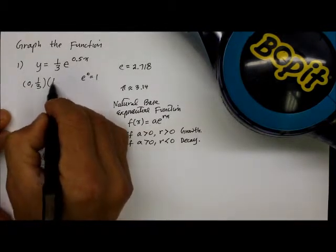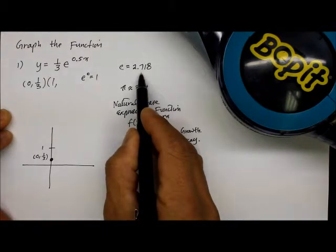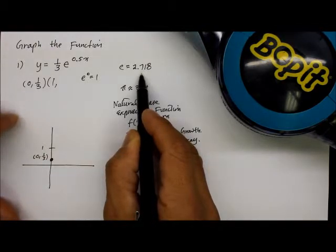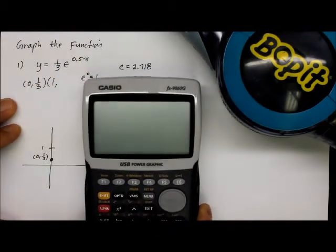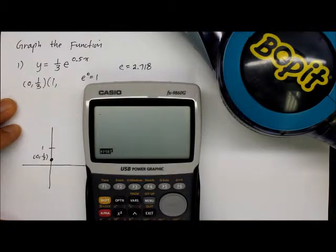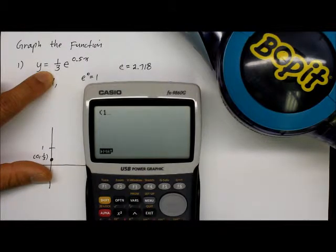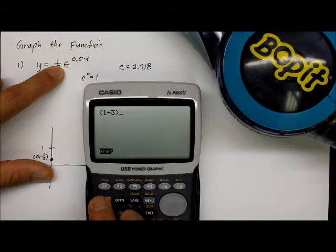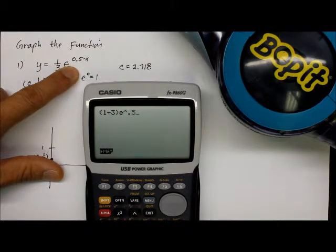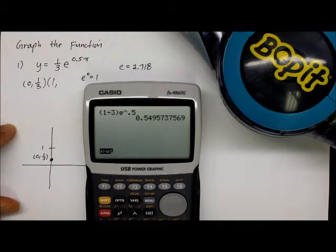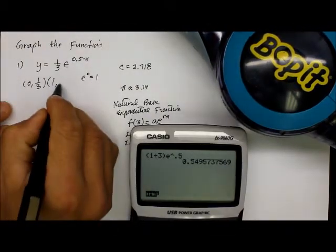So now let's let x equal one. Remember I said e is approximately 2.718. It's kind of getting ugly, isn't it? What's the best way to evaluate when x equals one? Yep, you got it. Break out the old calculator. Let's power this on. This time I got the calculator in math mode. Let's punch it in: one divided by three, close parenthesis, times e raised to 0.5 times one. I get 0.5495, so if I round it up, it becomes 0.55.